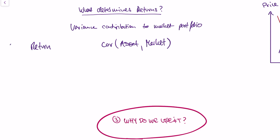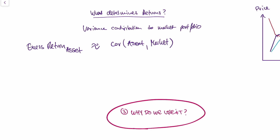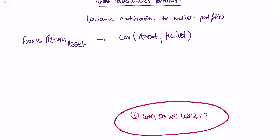The return of an asset should be proportional to how much it contributes to the risk of the market portfolio. The only thing left to complete the CAPM is some normalization. The covariance between the asset and the market portfolio is a great measure of how much risk a single asset contributes. When writing the model, we'd like the market portfolio itself to return exactly the market portfolio's return.